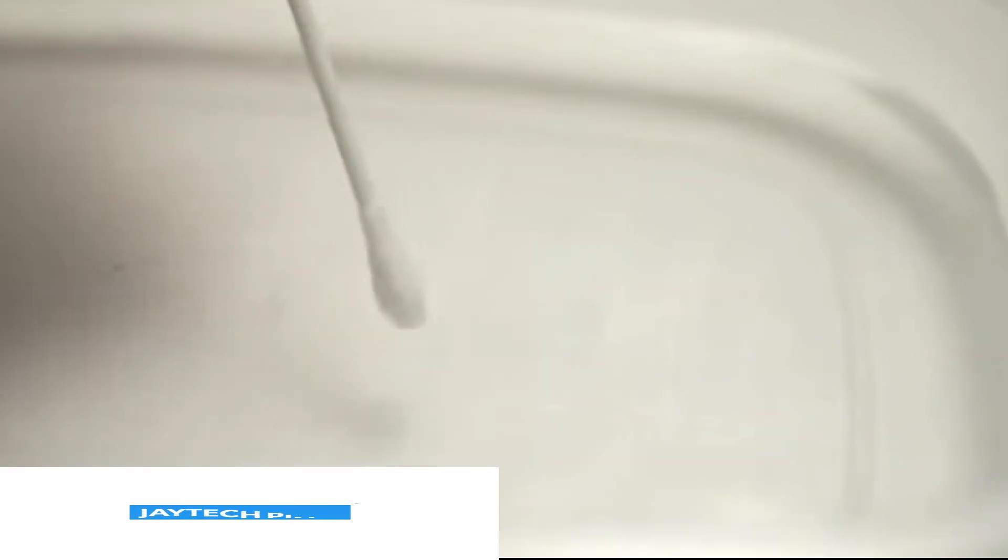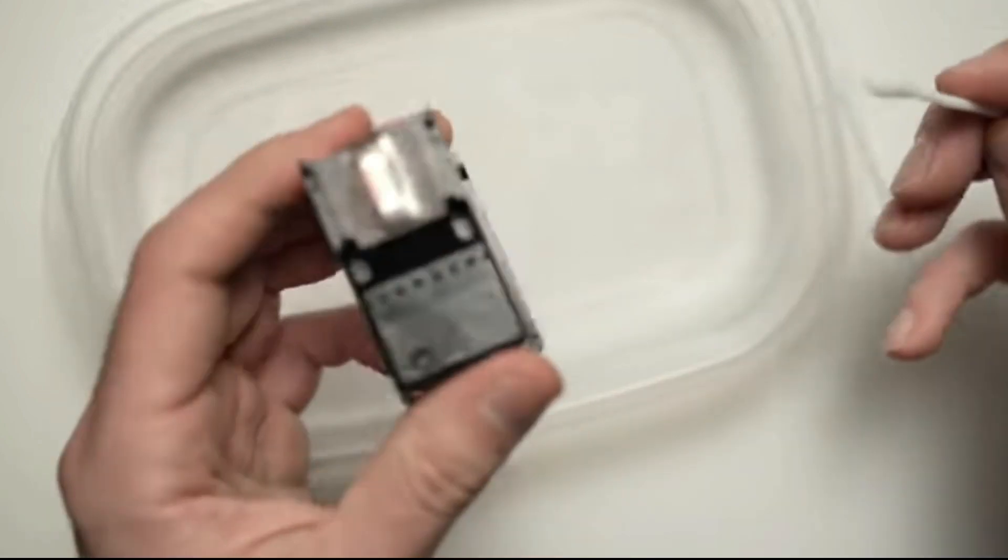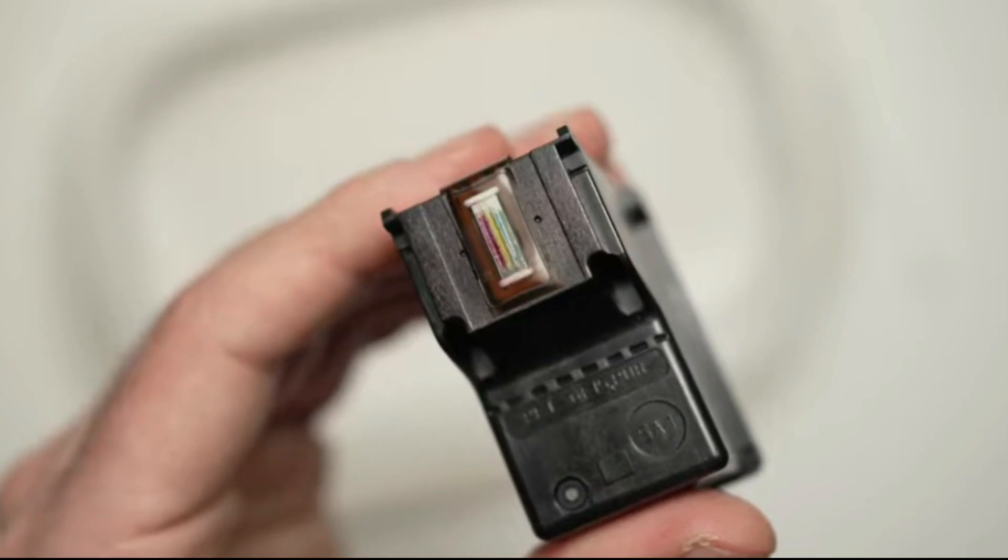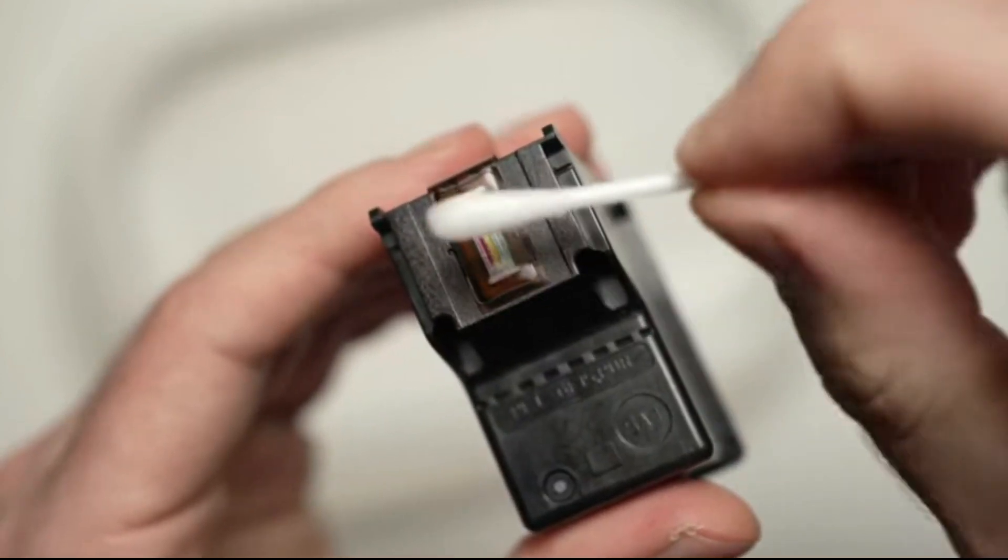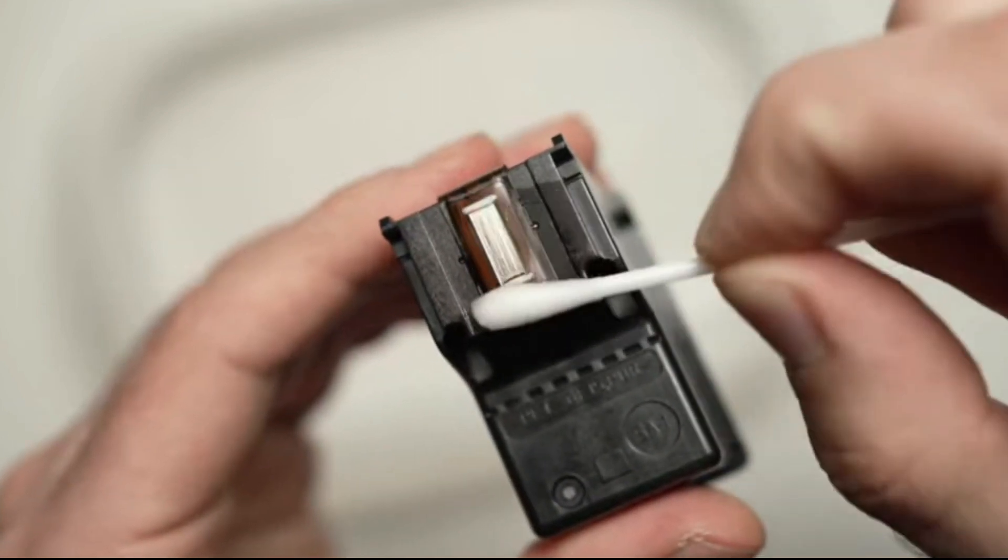Step 3: Moisten a lint-free cloth or tissue with distilled water. Wipe the copper-colored circuit strip in the back of the ink cartridge with the cloth or tissue. Wipe with an upward motion, but do not touch the nozzle end or the nozzle plate. Remove any excess moisture with a dry cloth.